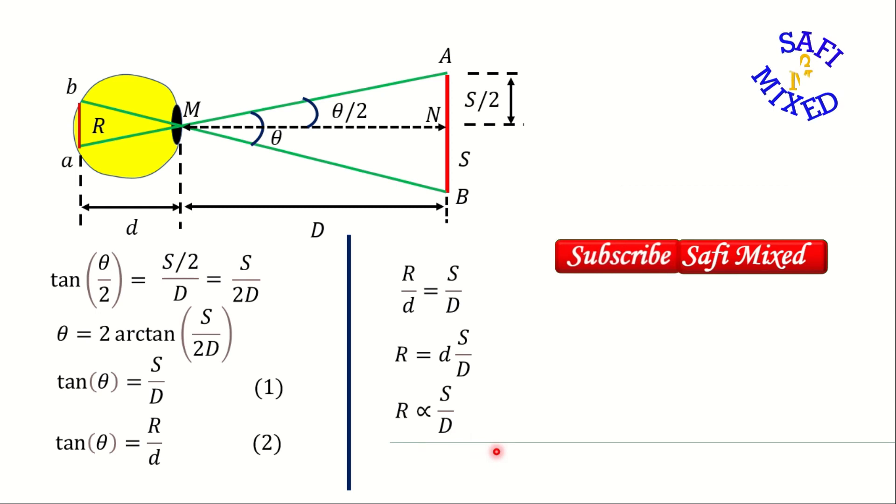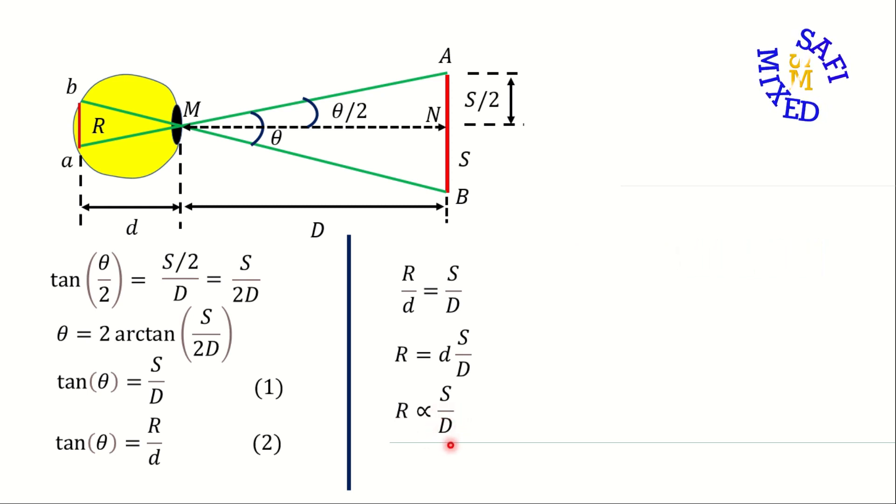This equation clearly dictates that the apparent size R of the object depends on the distance from the observer which goes to 0 as the distance increases to infinity.